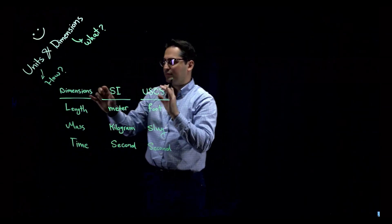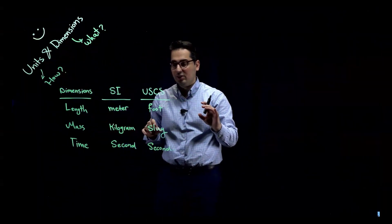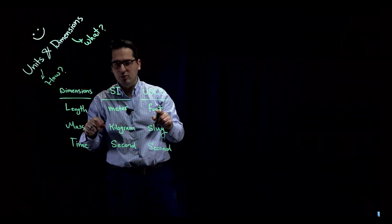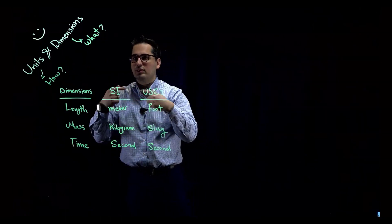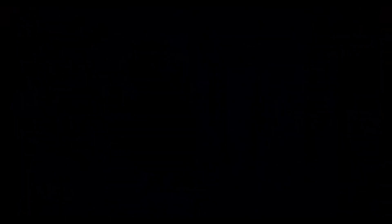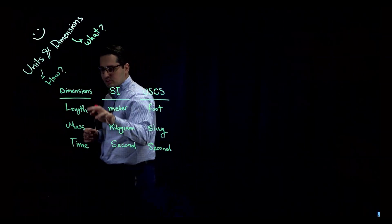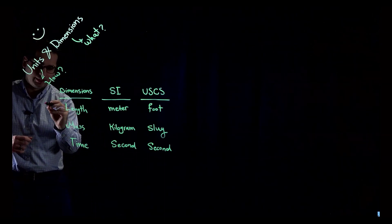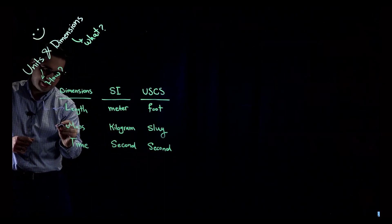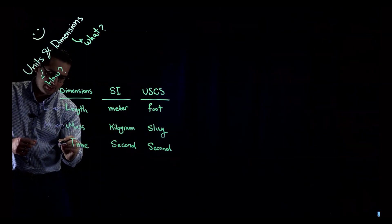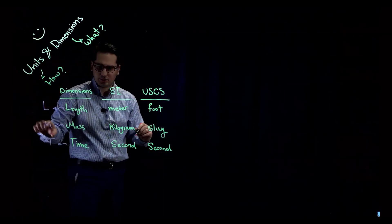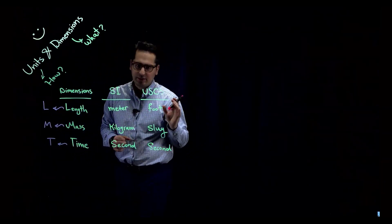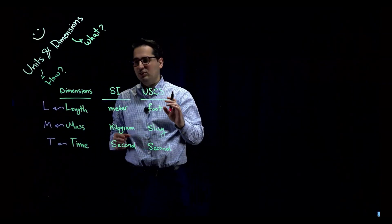The difference between dimensions and units should be clear: dimensions tell you what is being measured, and units tell you how it's being measured — the method. Another thing to know is that each dimension is represented using a capital English letter. For example, length is capital L, mass is capital M, and time is capital T. This helps simplify how we write different dimensions.